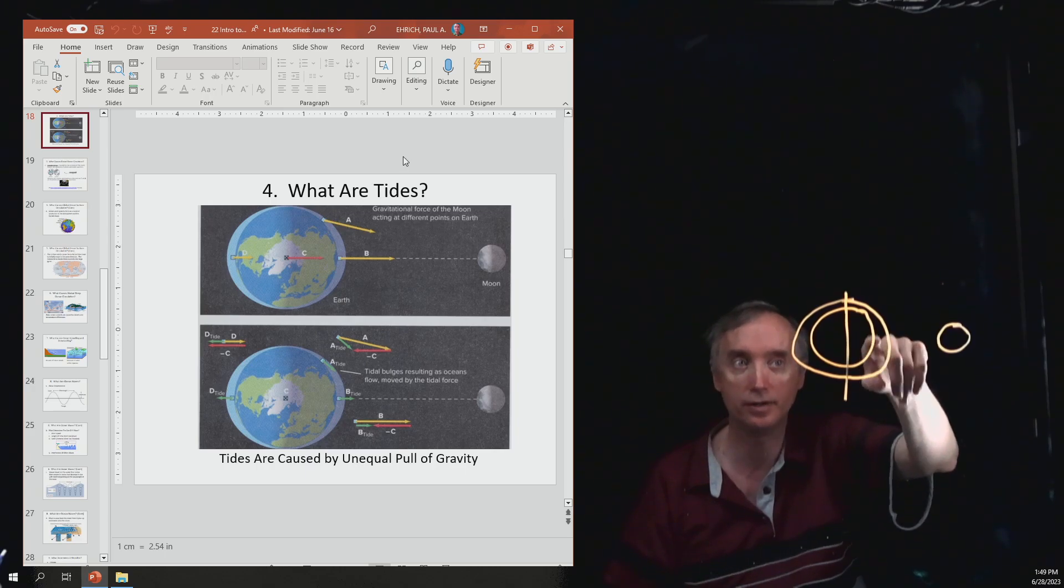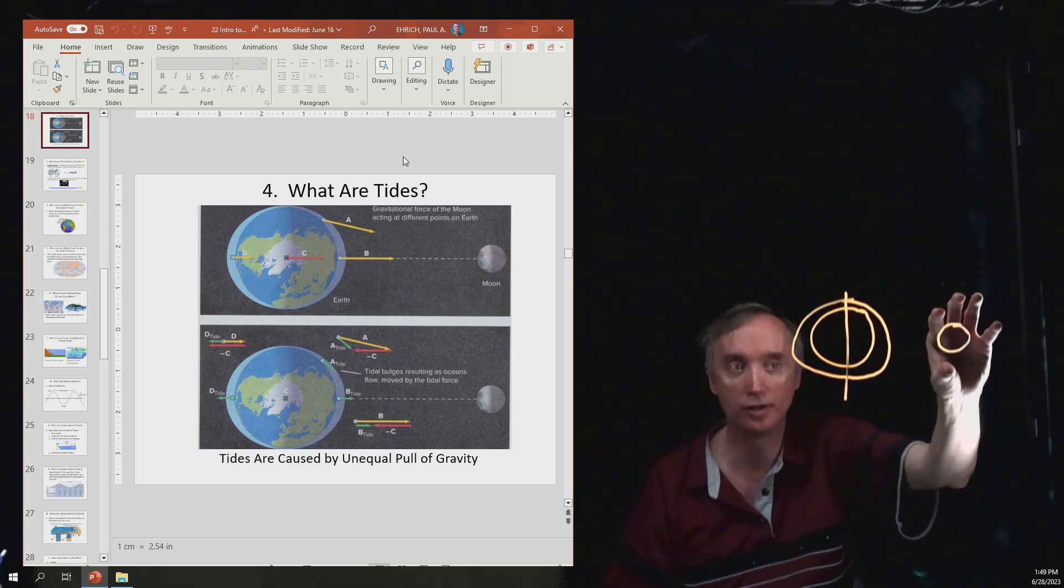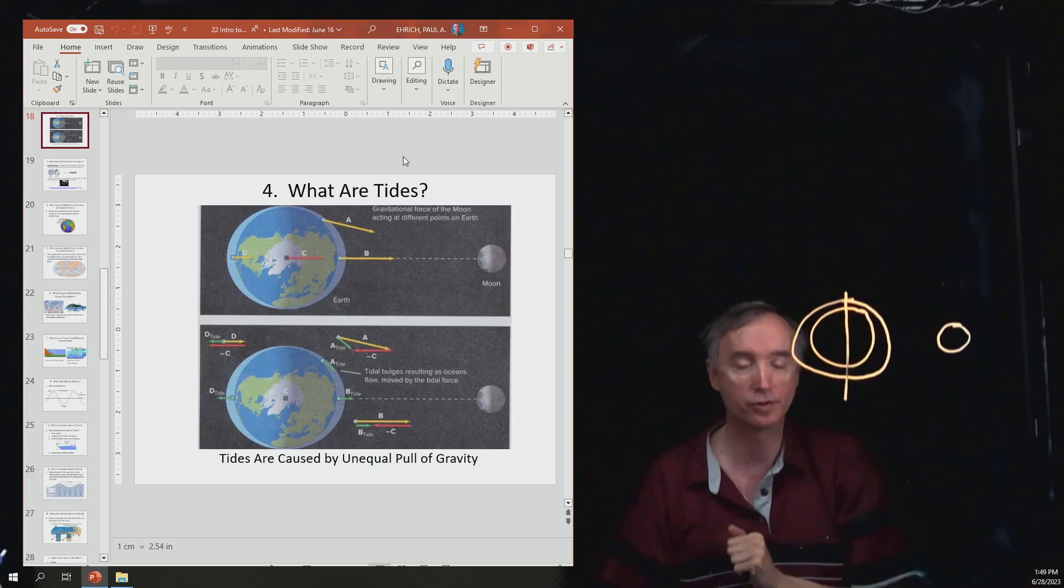But in actuality, the bulge is staying put and it's the earth that's rotating out from underneath it. So that's the reason why you have two high tides and two low tides per day.